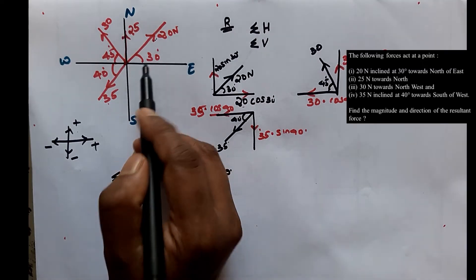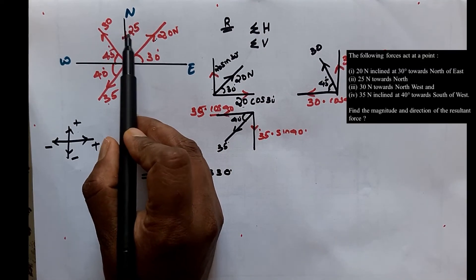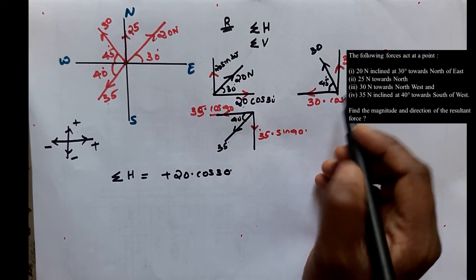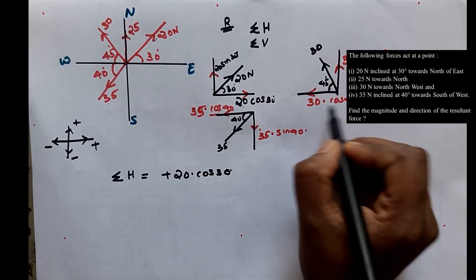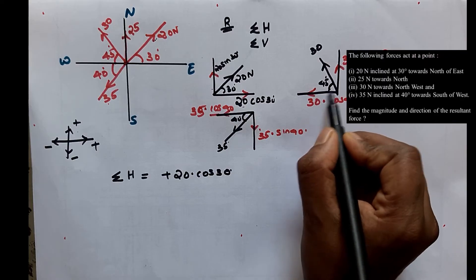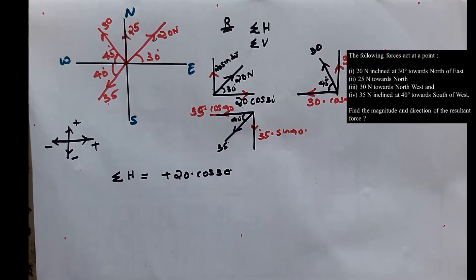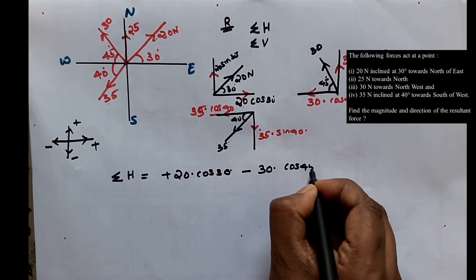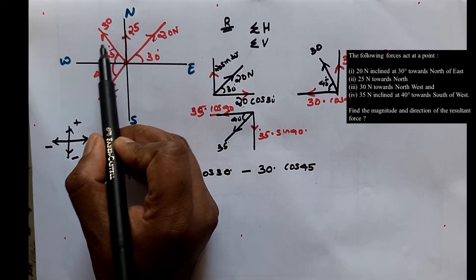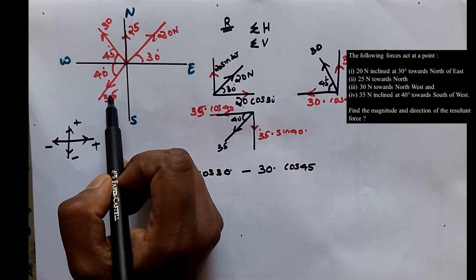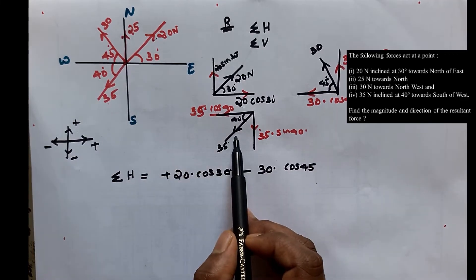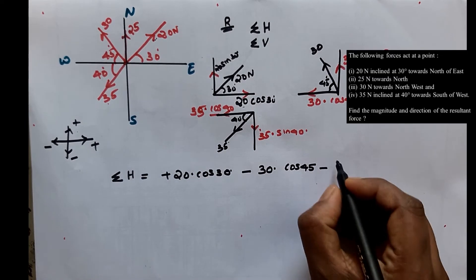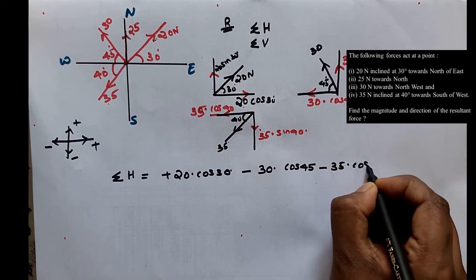The 25 N force has no horizontal component. The 30 N force has a horizontal component of 30 cos 45, directed to the left — so negative: minus 30 cos 45. The 35 N force has a horizontal component of 35 cos 40, also directed to the left — so negative: minus 35 cos 40.